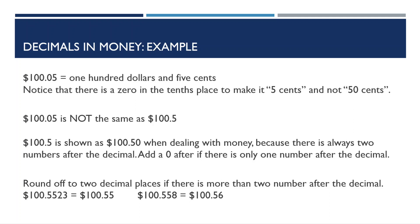Now, what happens if there's more than two numbers after the decimal when working with money? In this case, rounding would come in, and you would have to round off to two decimal places. So, 100.5523 would be rounded to 100.55, or $100.55. And 100.558 would be rounded to 100.56, or $100.56.